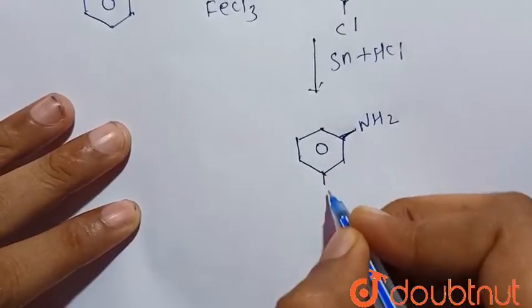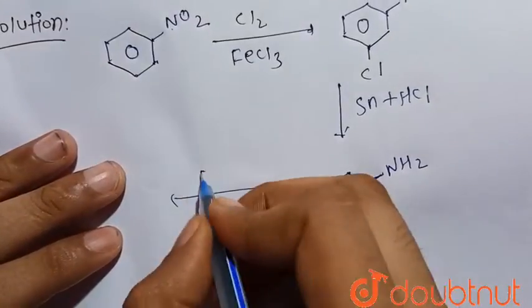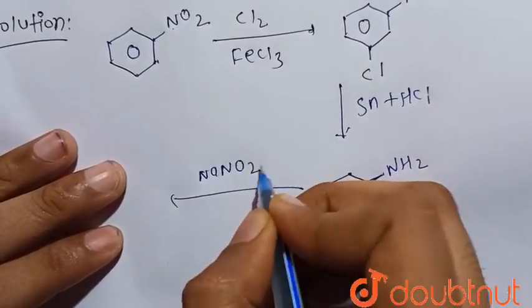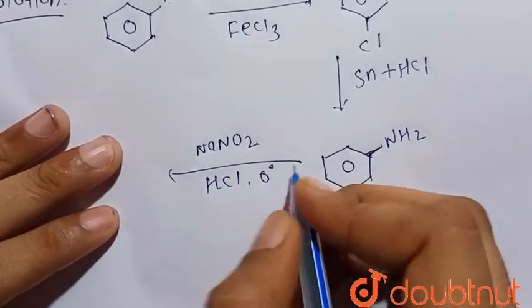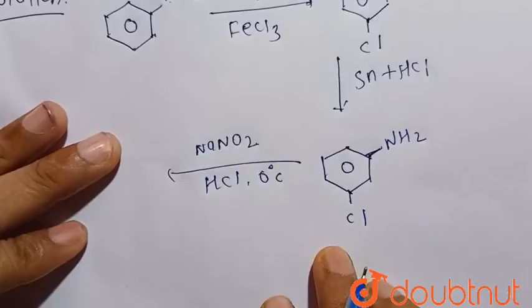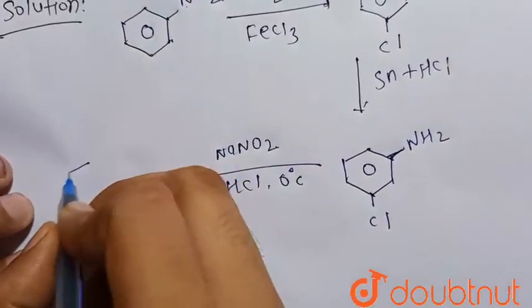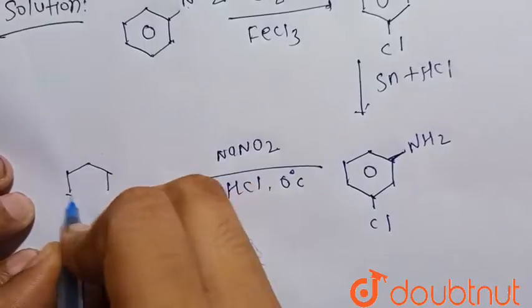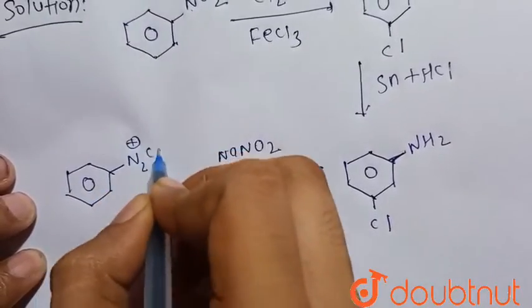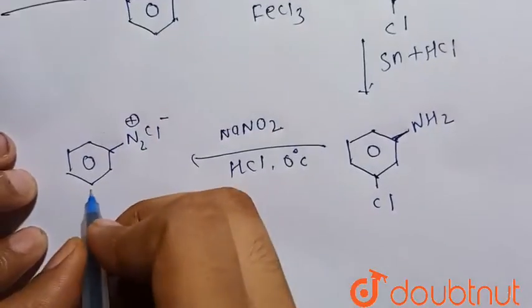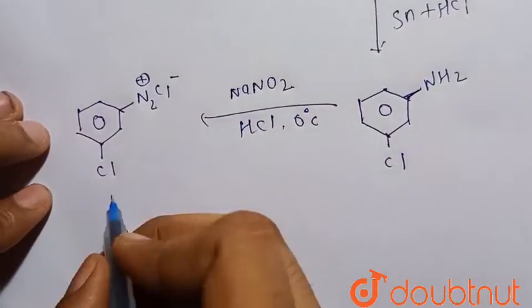Now it is treated with NaNO2 in the presence of HCl at 0 degrees Celsius. So this is the diazotization reaction. There will be the formation of the diazonium salt, that is N2+ Cl-, and here Cl is already present.